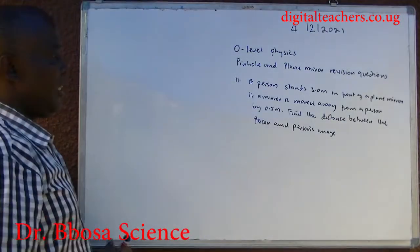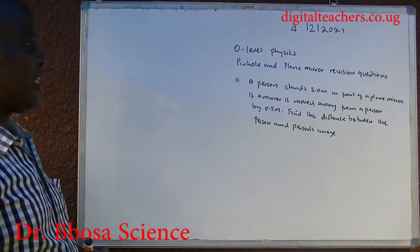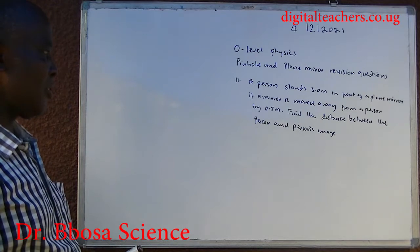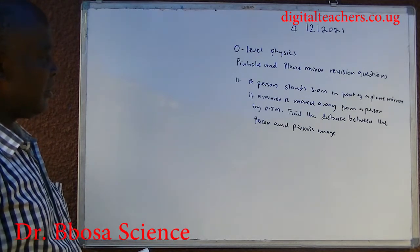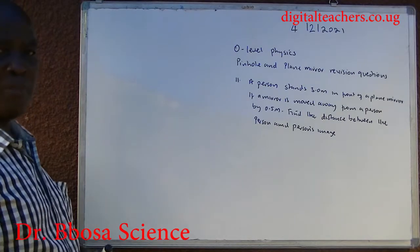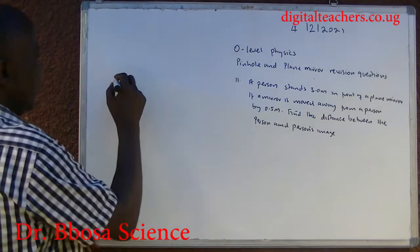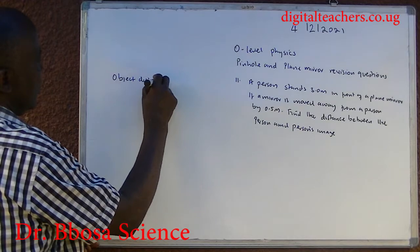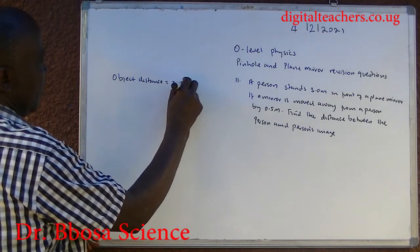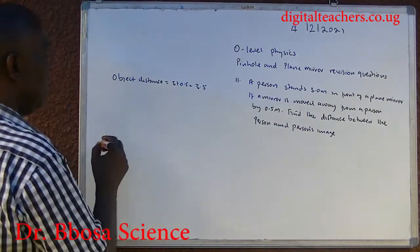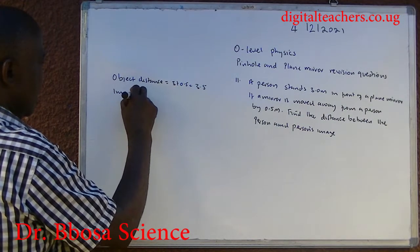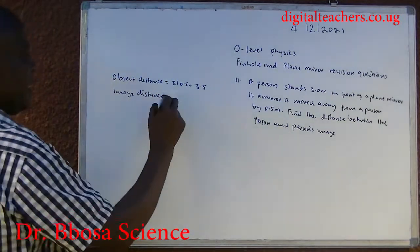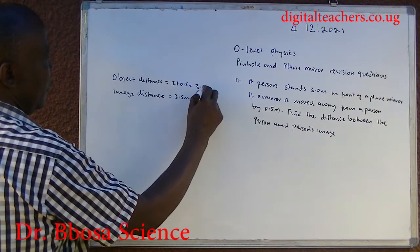Number eleven: a person stands 3 meters in front of a plane mirror. If the mirror is moved away from the person by 0.5 meters, find the distance between the person and the person's image. The object distance is equal to 3 plus 0.5, which equals 3.5 meters. The image distance equals the object distance, which equals 3.5 meters.